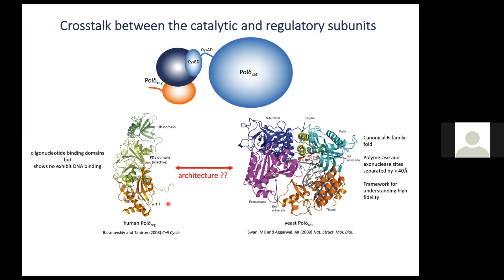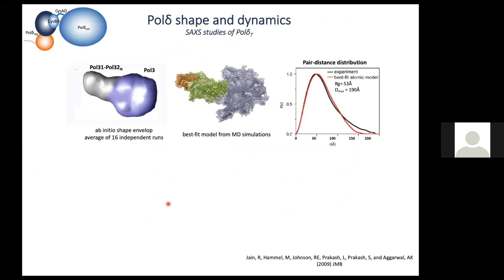The structure of the human homologue of the regulatory module was determined by Tahirov's group, revealing an elongated molecule with domains typically associated with DNA or oligonucleotide binding — but experiments with the human homologues showed no DNA binding. These were seminal structures, but what was missing was how they come together in 3D. After crystallization efforts failed, we initially tried small-angle X-ray scattering to derive the overall shape of the protein.